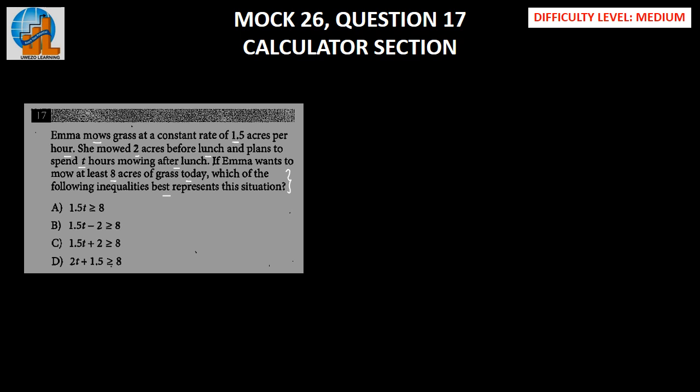We know the total land mowed before lunch plus total land mowed after lunch has to be greater than or equal to eight, because she is going to mow at least eight acres of land. This entire thing has to be greater than or equal to eight because the minimum value has to be eight.